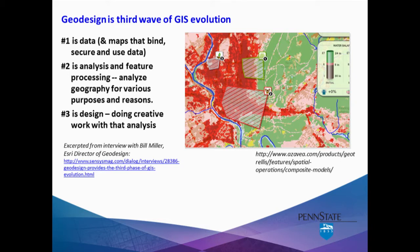There are three major segments of GIS evolution and technologies. The first is data, with the maps that bind, secure, and use data. Esri started out developing geodatabases, and the big question was, where's the data? As that mission was fulfilled, it migrated to the second segment, which is analysis and feature processing — you analyze geography for various purposes and reasons. The third segment is design, and that's the most recent. Once you have data, you analyze it for a purpose, then you do creative work with that analysis. End quote.